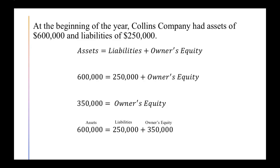So we're going to use that information along with our asset and liability amounts to make up the beginning of the year accounting equation. We have our assets, our liabilities, and our owner's equity — this is what we started the year with. Now we can start working on parts A, B, and C.